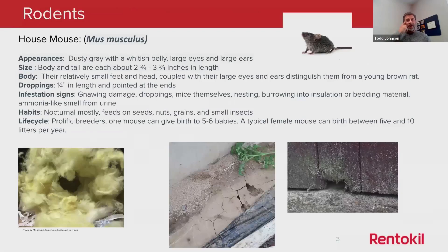All right, so I'd like to start off with our first group of pests, which are rodents. The first one that you're going to find around a farm or agriculture area is going to be a house mouse.